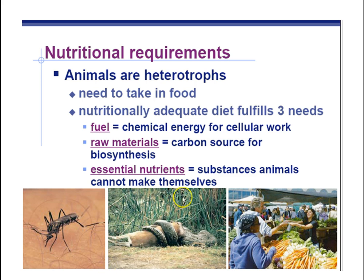Let's write down the three reasons why animals need to eat: fuel — chemical energy to do cell work — raw materials, carbon source, and essential nutrients. For essential nutrients, we're going to focus on things like vitamins and minerals.